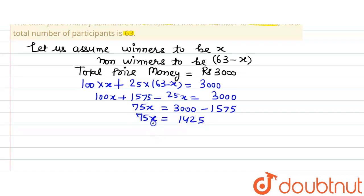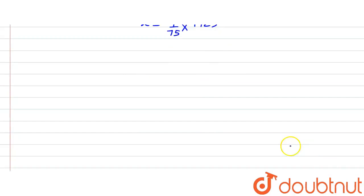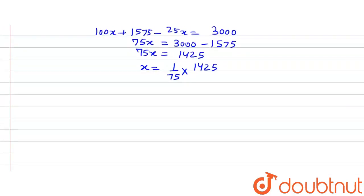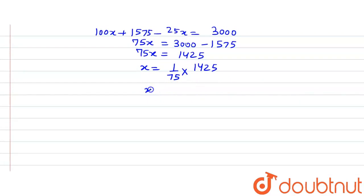Now, 75 is getting multiplied by X here. When it will go to the right-hand side of the equation, it will get divided. So what we will get is 1 by 75 multiplied by 1425. Now, simplifying it further, we will get X is equal to 19.